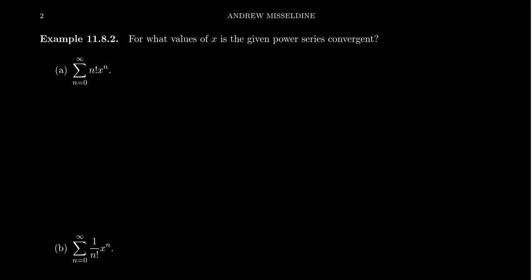In a previous video we introduced the notion of power series, which are series that involve some variable X and take powers of X inside the series. Now because power series are themselves series, the convergence of a power series is something we have to worry about — and it's actually going to depend on the choice of X. There'll be some choices of X that work and some that don't.